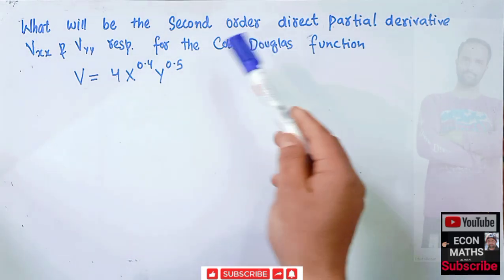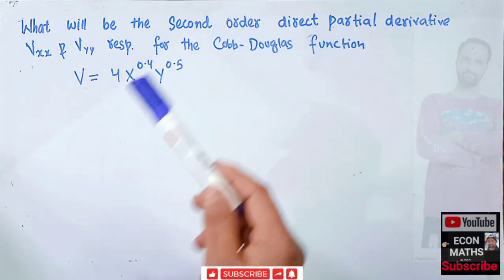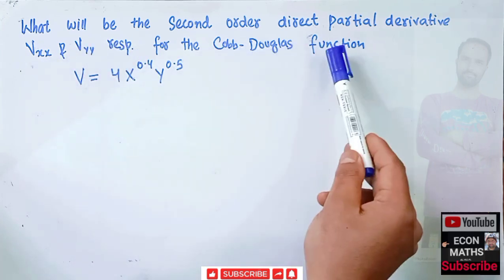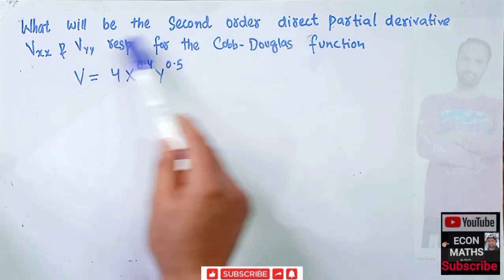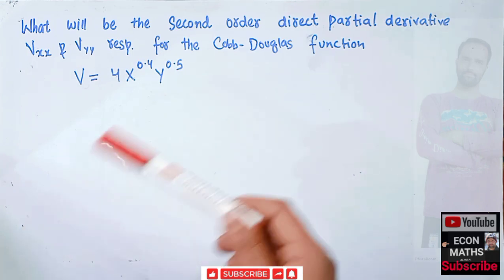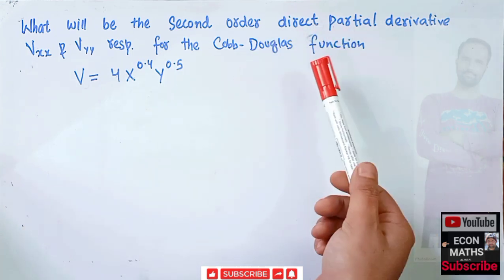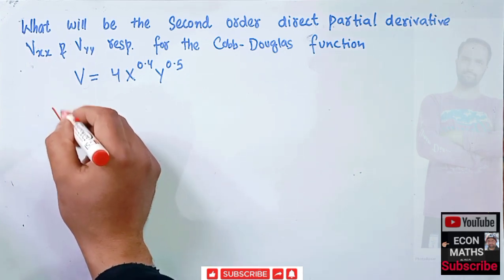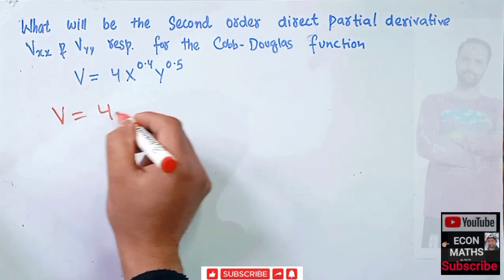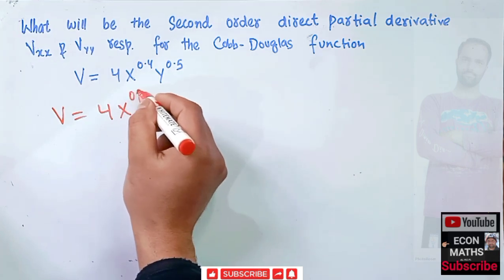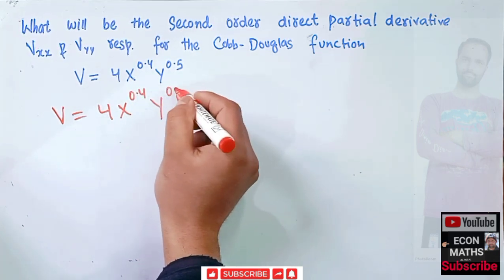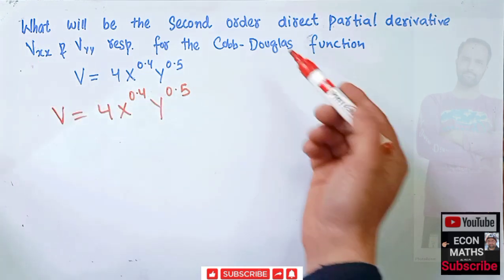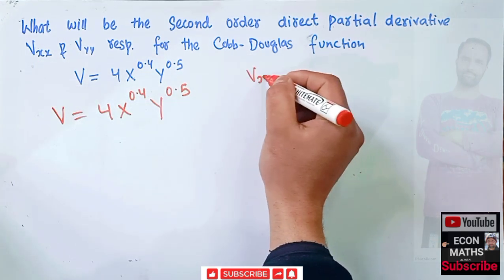In this question we have to find out the second order direct partial derivatives vxx and vyy respectively for the Cobb-Douglas production function. Our function is v = 4x^0.4 * y^0.5, and we need to find the second order direct partial derivatives.